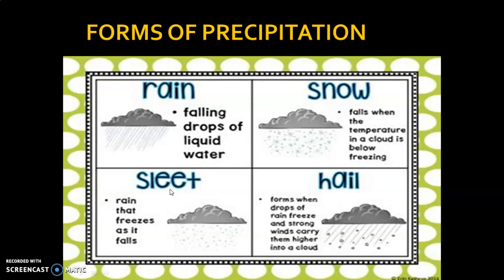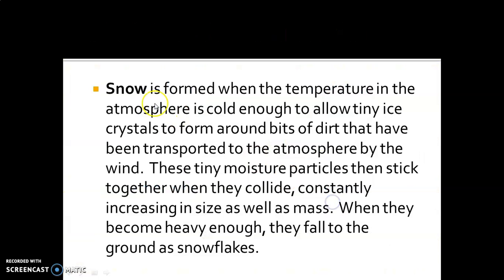The next form of precipitation is sleet. Sleet is a mixture of rain and snow.